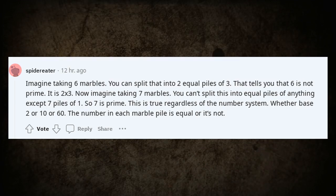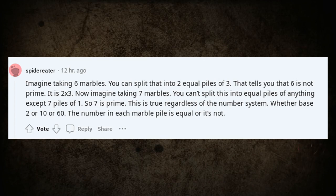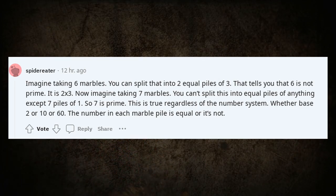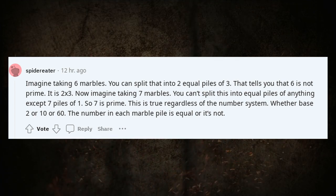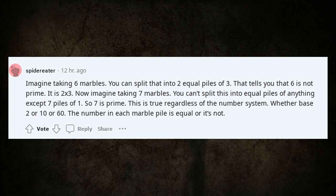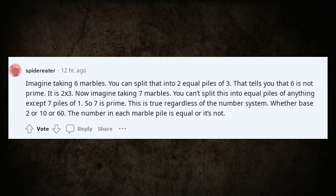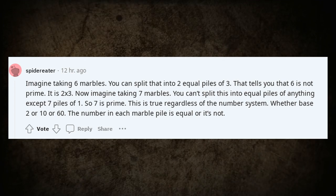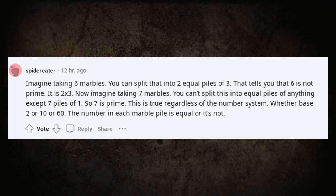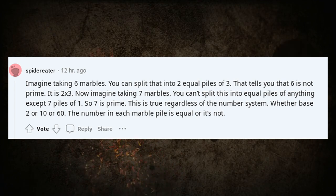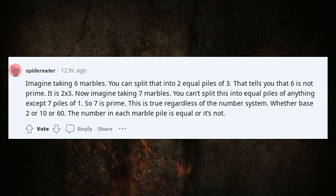Imagine taking 6 marbles. You can split that into 2 equal piles of 3. That tells you that 6 is not prime. It is 2 by 3. Now imagine taking 7 marbles. You can't split this into equal piles of anything except 7 piles of 1. So 7 is prime. This is true regardless of the number system. Whether base 2 or 10 or 60. The number in each marble pile is equal or it's not.